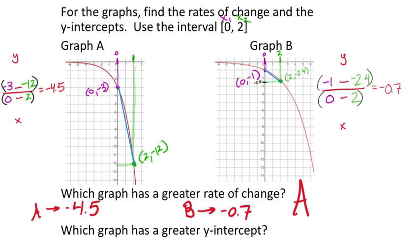For the y-intercepts: graph A has (0, -3) and graph B has (0, -1). Which one is greater means which one is higher. Negative 1 is higher than negative 3, so graph B has the greater y-intercept—you can get that answer no matter which way you compare them.